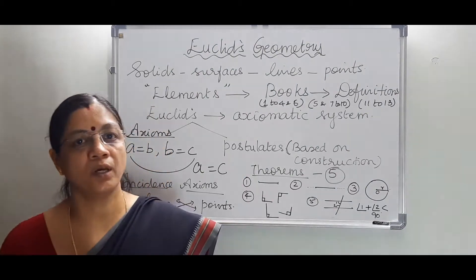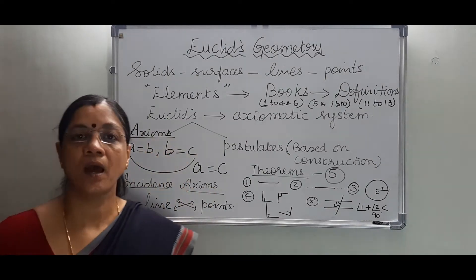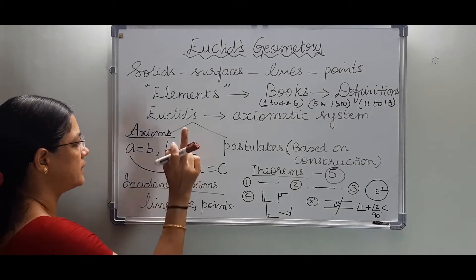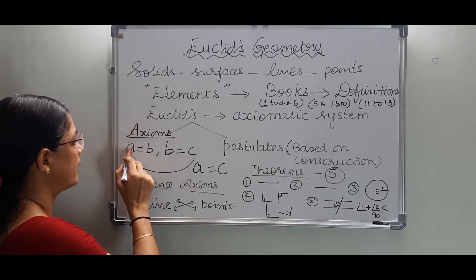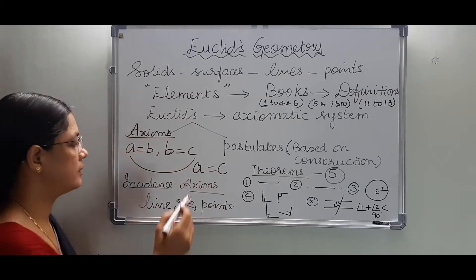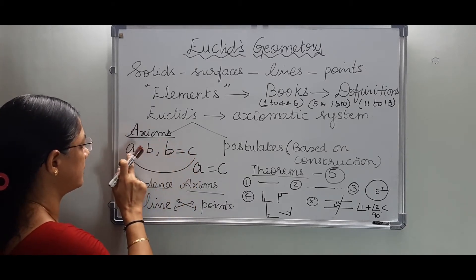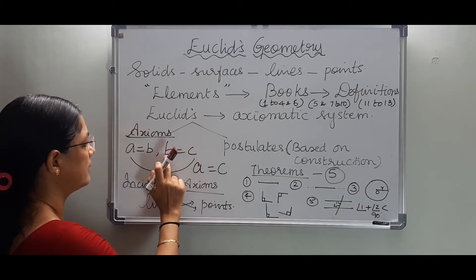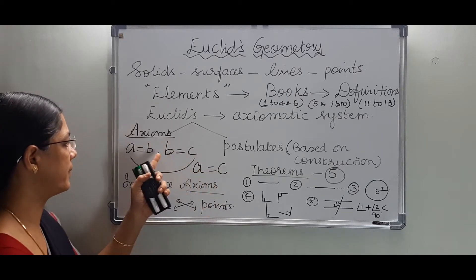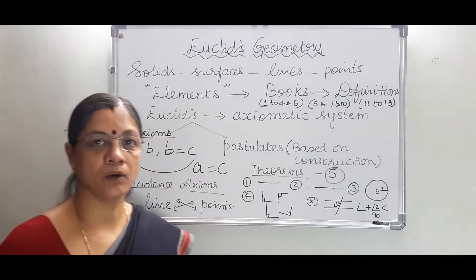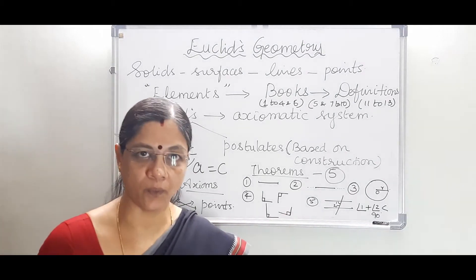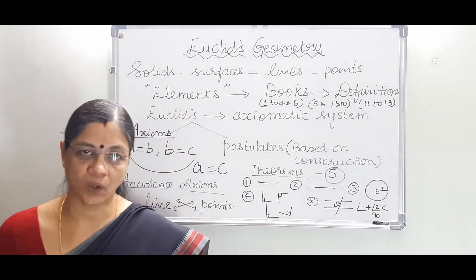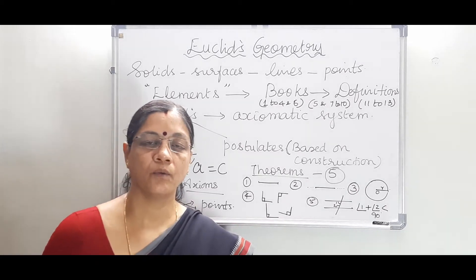So if A equals B, B equals C, and A equals C, and if we add corresponding equals together, then A + B + C equals A + B + C — the wholes are also equal. Likewise, if equals are subtracted from equals, then the remainders are also equal. This is one of the axioms.